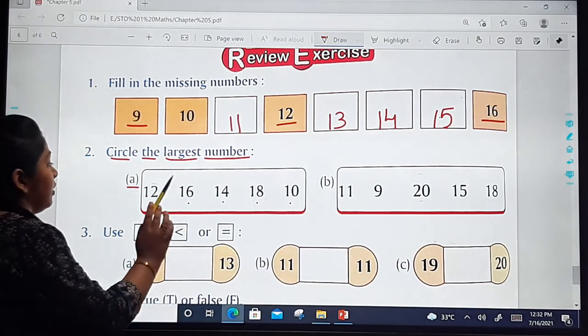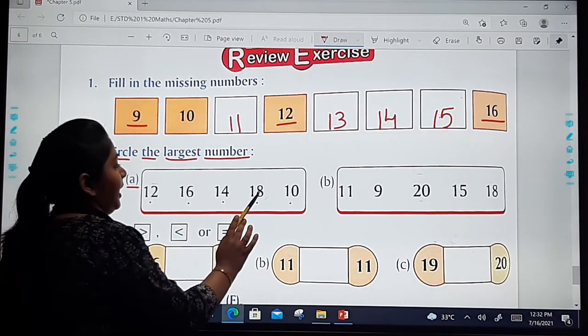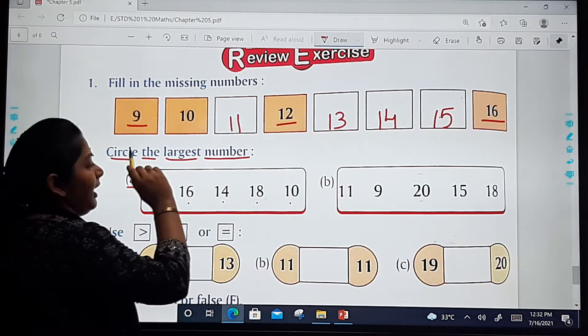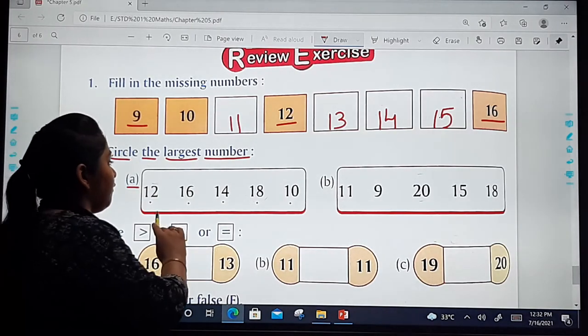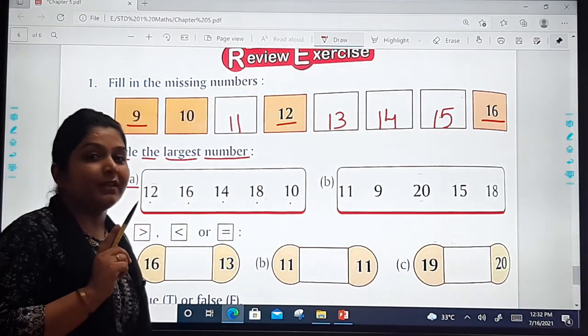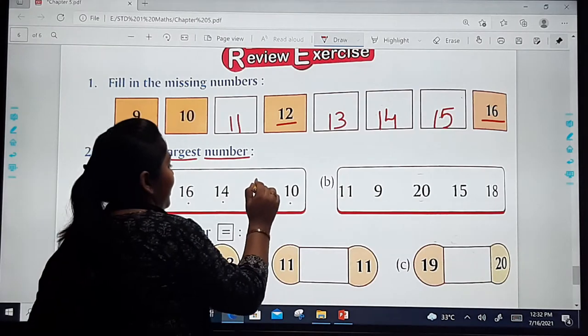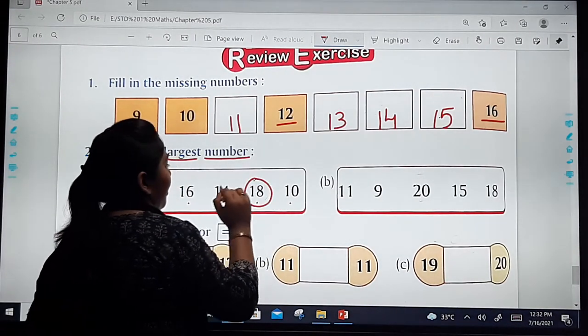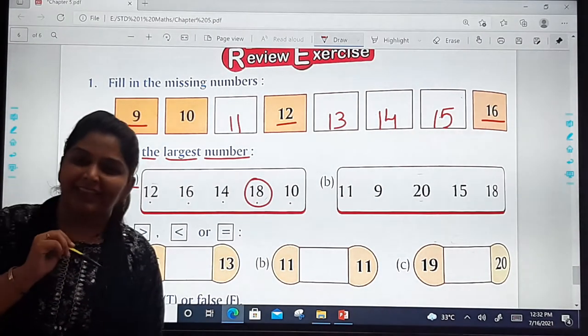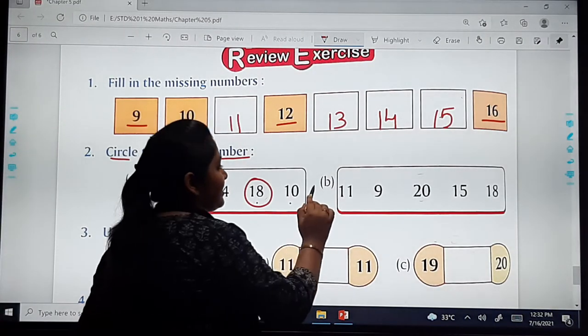So let us see the numbers: 12, 16, 14, 18, 10. Now tell me which is the largest one. Sabse bada number konsa hai? That is your number 18. So you will circle the number 18 like this. Understood?